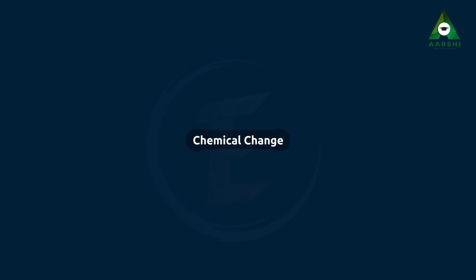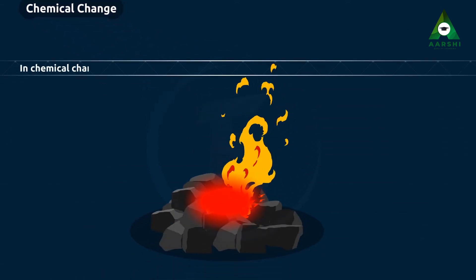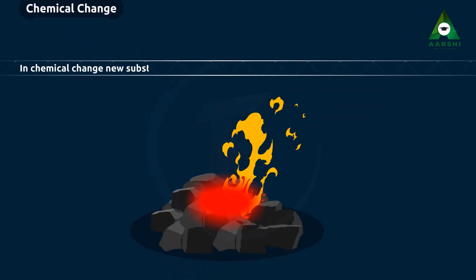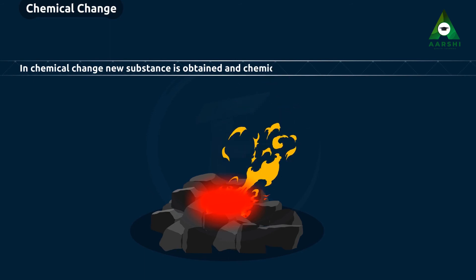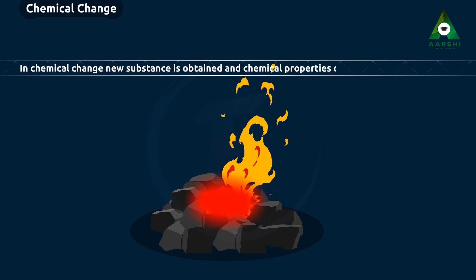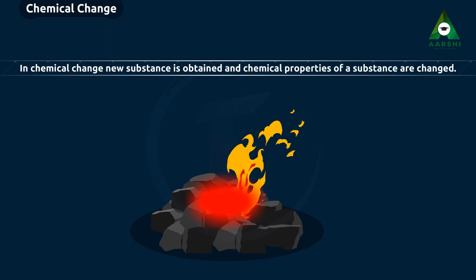Chemical change. In chemical change, a new substance is obtained and the chemical properties of the substance are changed.